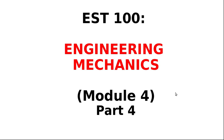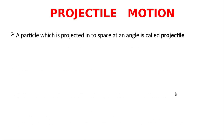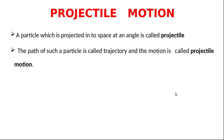Hi all, welcome. This is the fourth part of module 4 of engineering mechanics. Today I am going to discuss about projectile motion. A particle which is projected into space at an angle is called a projectile, and the path of such a particle is called trajectory, and the motion is called projectile motion.